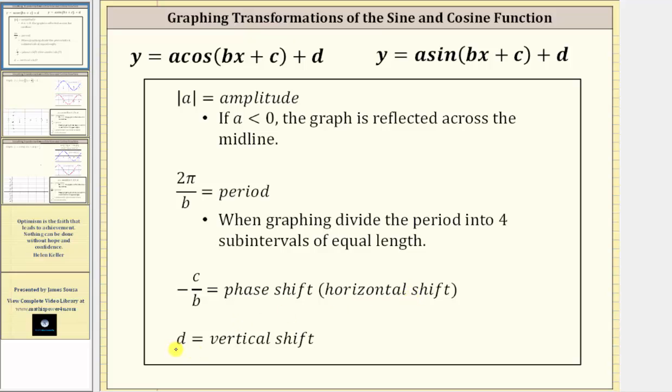And d is equal to the vertical shift, where if d is positive, the shift is up, and if d is negative, the shift is down.